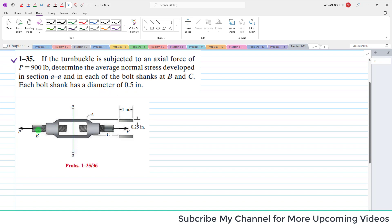You can see this is bolt shank B and C having diameter 0.5 inch. The load P is given as 900 pounds. So you have to find the normal stress, average normal stress at section A-A and at the shanks of the bolt.